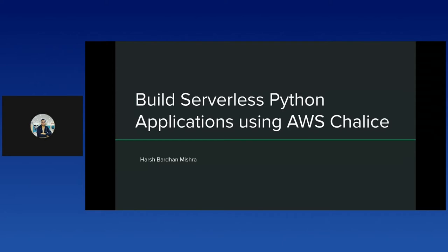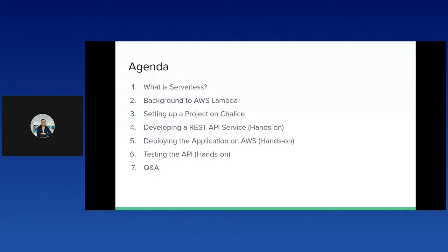In this talk we will be discussing serverless computing, AWS Lambda, and AWS Chalice, which is the Python serverless framework on AWS. This is a short talk aiming to introduce you to AWS Chalice and how you can develop a simple API using Chalice and deploy it over AWS resources. Let me introduce the agenda for this 30-minute talk.